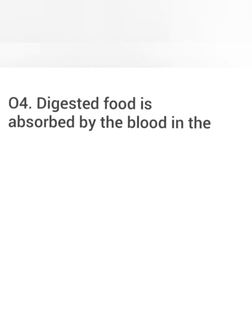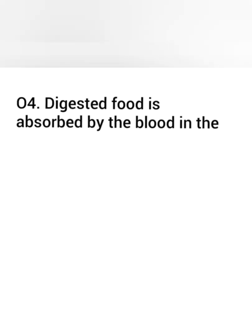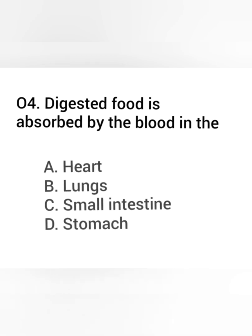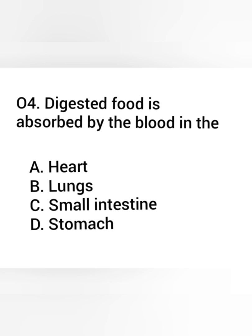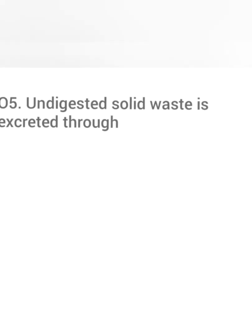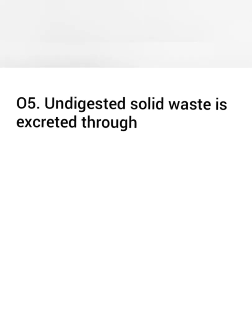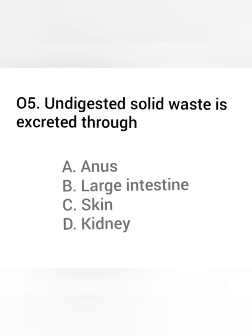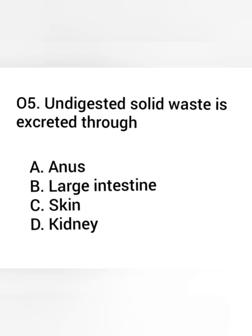Question 4. Digested food is absorbed by the blood in the — Answer: Small intestine. Question 5. Undigested solid waste is excreted through — Answer: Anus.